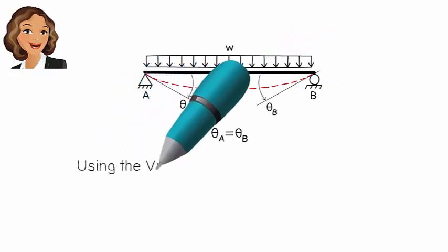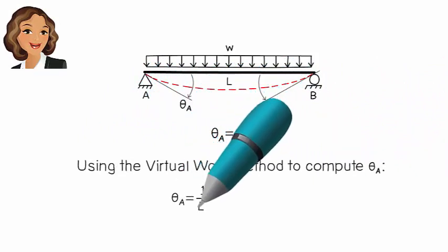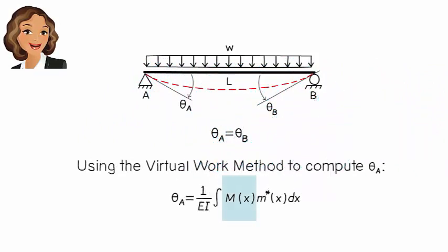Let's compute theta A using the virtual work method. According to this method, we can write, where mx is the beam's bending moment equation due to the applied load, and m star x is the bending moment equation due to a virtual unit moment placed at A in the assumed direction of joint rotation.